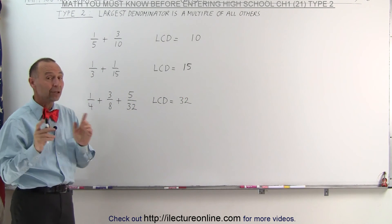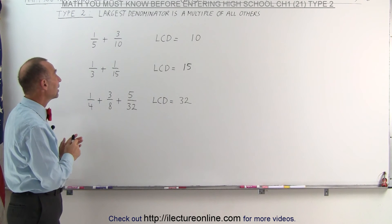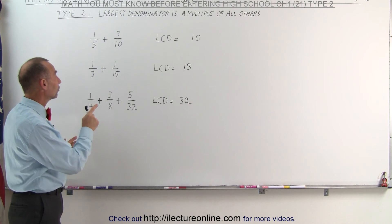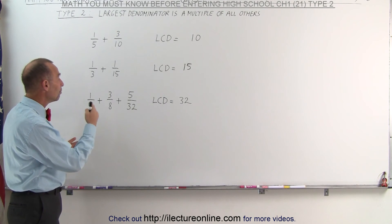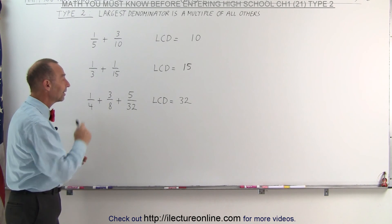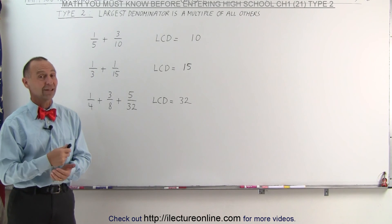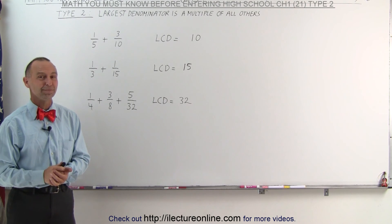Now that was the easiest video of them all, wasn't it? But again, you need to be careful. Look at all the denominators. If the largest one is a multiple of all the other denominators, that simply becomes the lowest common denominator. And that's how it's done.